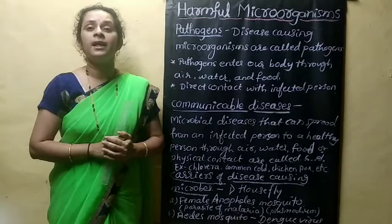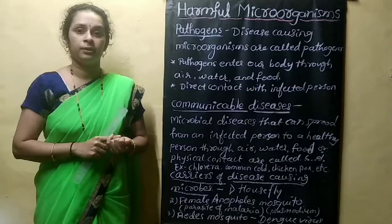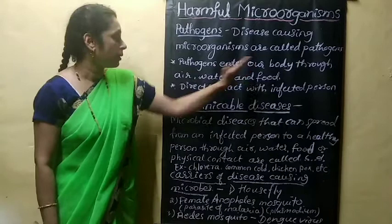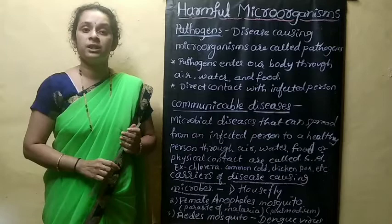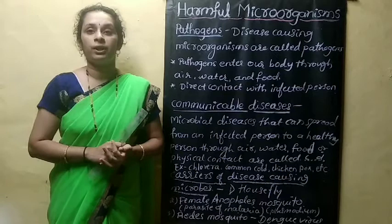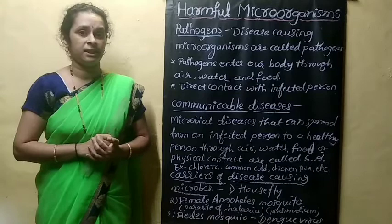These pathogens enter our body through air, water, food, or by physical contact with an infected person. These are the ways through which pathogens enter the body. They enter the body and cause some diseases. First of all, we will discuss what is a communicable disease.